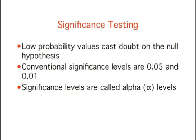it is conventional to conclude the null hypothesis is false if the probability value is less than 0.05. More conservative researchers conclude the null hypothesis is false only if the probability value is less than 0.01.